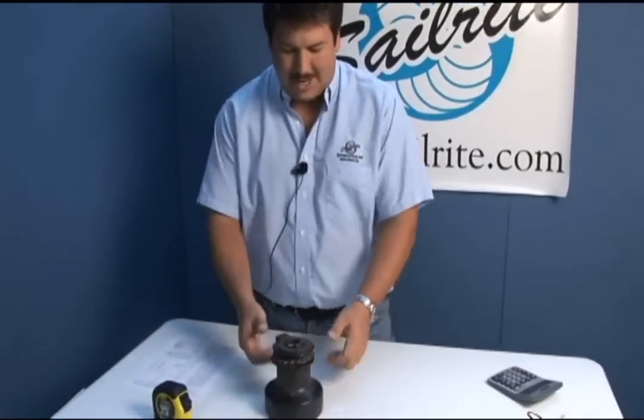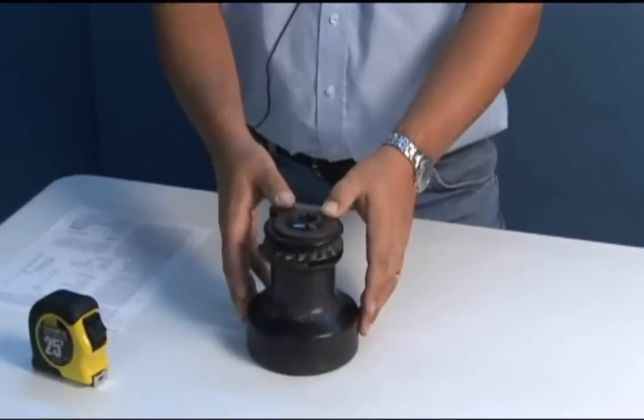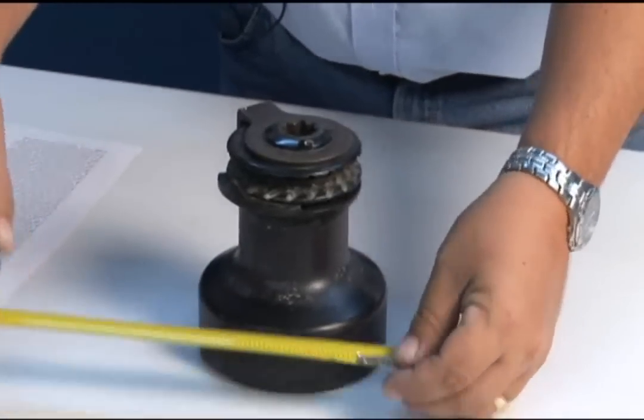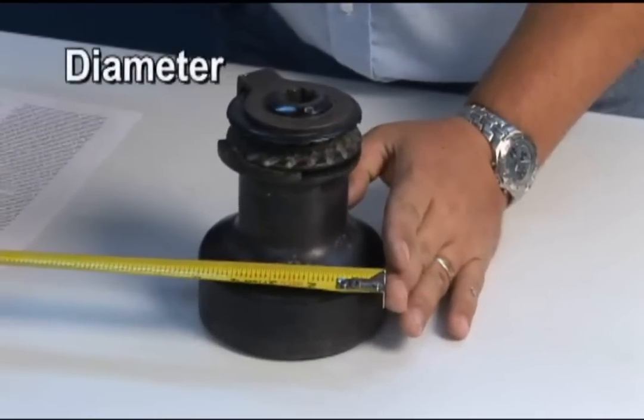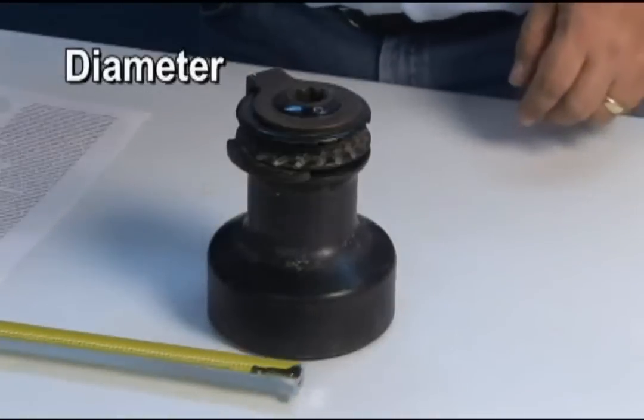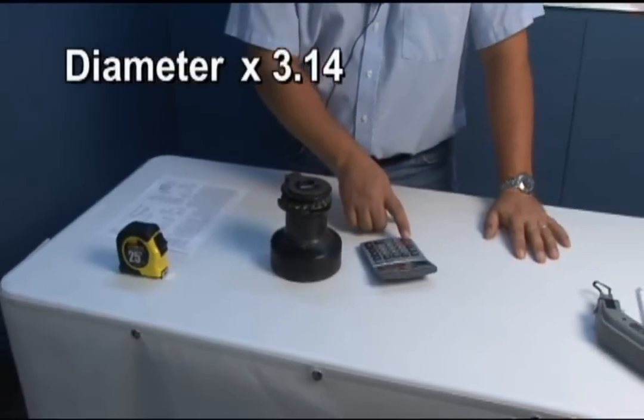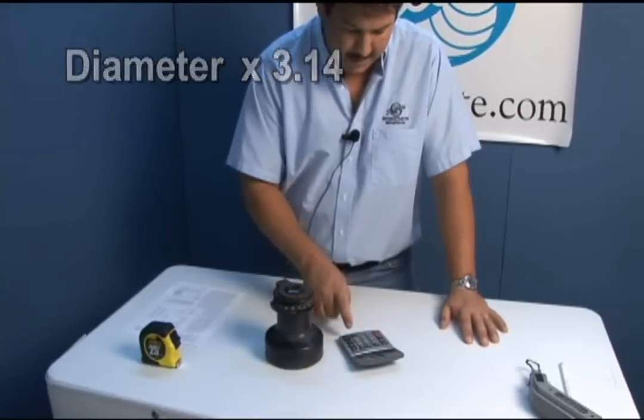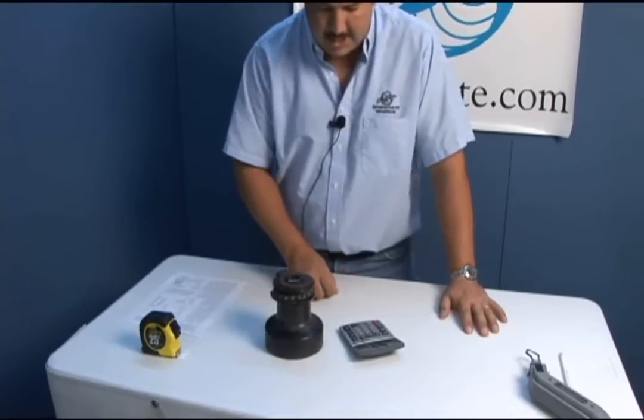We've purchased a winch for this demonstration from Sailor Man just down the street here in Fort Lauderdale. What you need to do first is measure the diameter. Take your tape measure and measure the widest part of the winch. This is five and an eighth. If you remember your high school education, you want to multiply that times pi which is 3.14. So 5.125 times 3.14 equals 16.09.